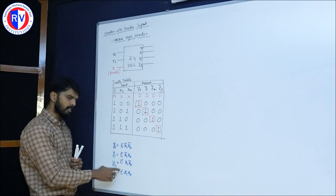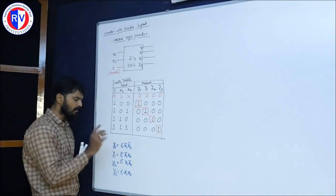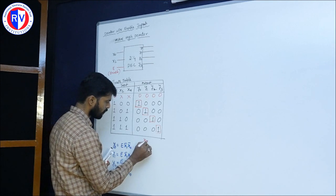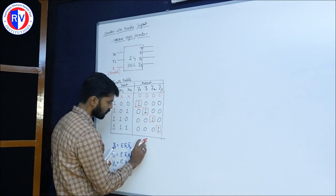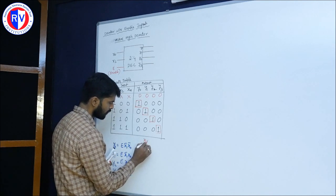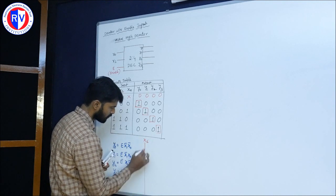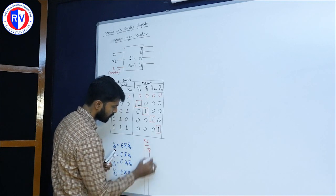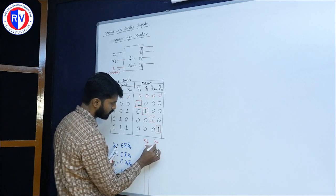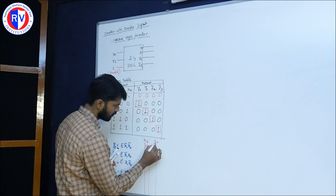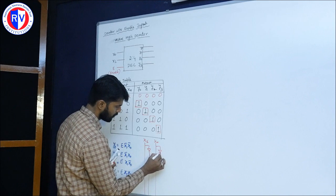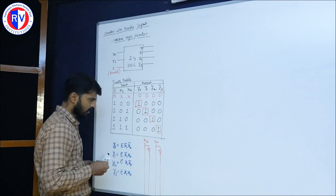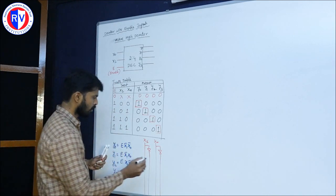Now I need to write the equation. I will take x0 and x1 on one side along with their complements. Here I will take x0 and its complement. With respect to that, now I will construct the output.